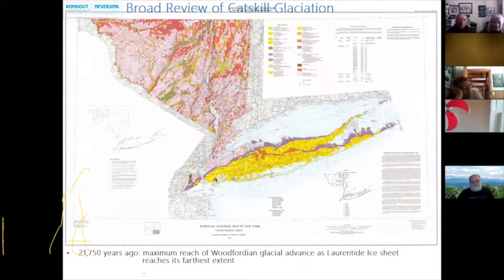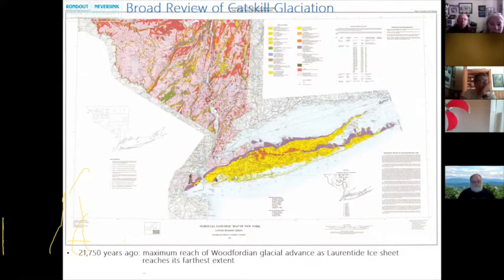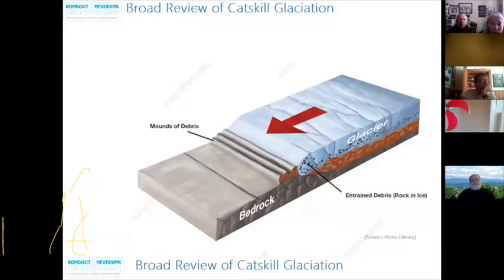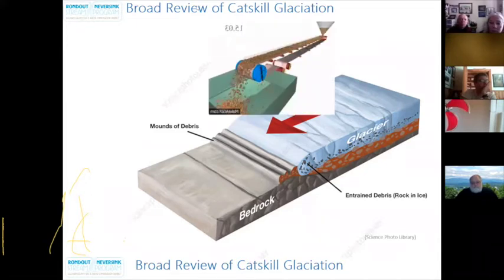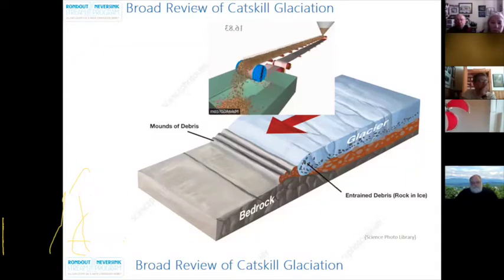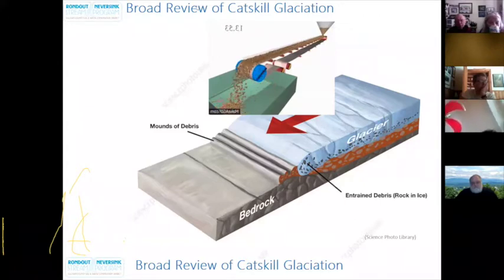Around 21,750 years ago, the Woodfordian Glacial Advance reached its farthest extent — the Continental Ice Sheet expanded to its farthest point along the southern border of New York State and remained at a constant latitude for a while. As it lingered, the glacier deposited a tremendous mound of sediment, rock, and debris it had been carrying. When a glacier stays at one location for a long period of time, a massive mound of sediment and debris — called a moraine — is deposited. Moraines deposited as a glacier pauses during retreat are recessional moraines; those at a glacier's farthest advance line are terminal moraines.